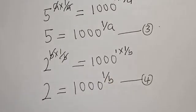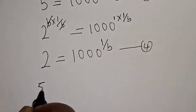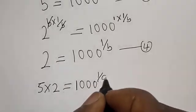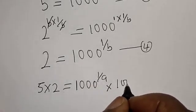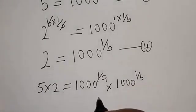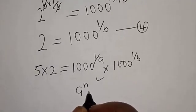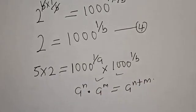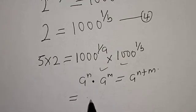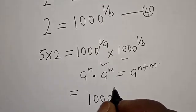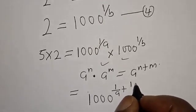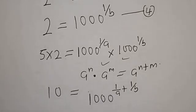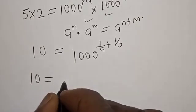Now let's multiply equation 3 and equation 4 together. Then we have 5 multiplied by 2 is equal to 1000 raised to power 1 over a plus 1 over b. The left-hand side becomes 5 times 2, that is 10. Then we have 10 is equal to 1000 raised to power 1 over a plus 1 over b.